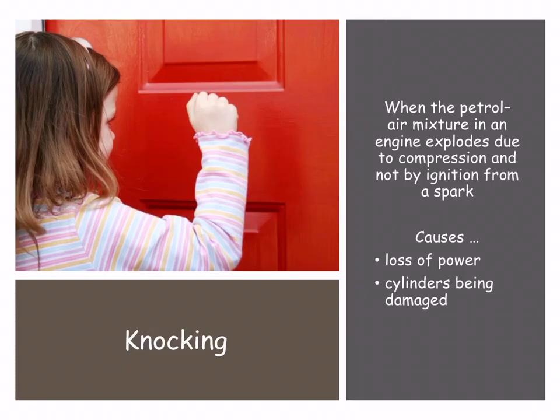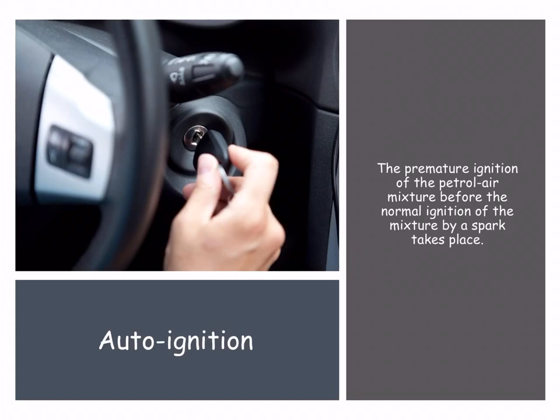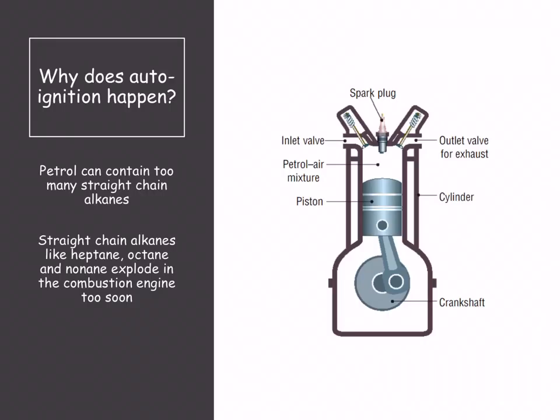Knocking is when the air and petrol mixture in the engine explodes due to compression and not by the spark, which results in a loss of power in the car and the cylinders being damaged. Auto ignition is the premature ignition of the petrol-air mixture before normal ignition of the mixture by a spark takes place. This is a definition you need to know word-perfectly for your examinations.